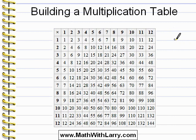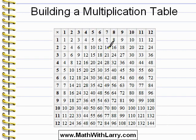Recall how to use the multiplication table. If I want to multiply 4 times 7, what I'll do is go down to 4 along the left, and then go to the right along the top to 7, and then see where that row and that column intersect. And of course the answer is 28.